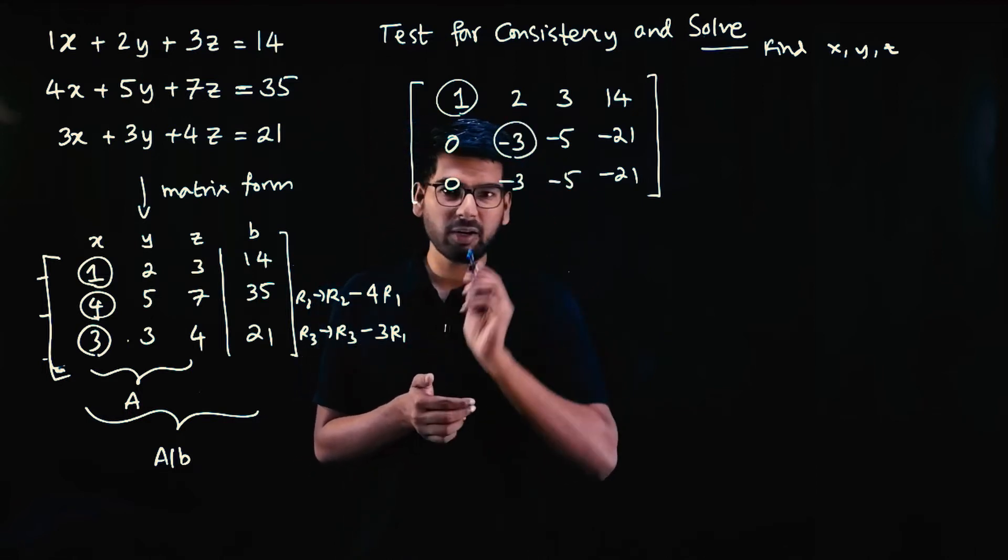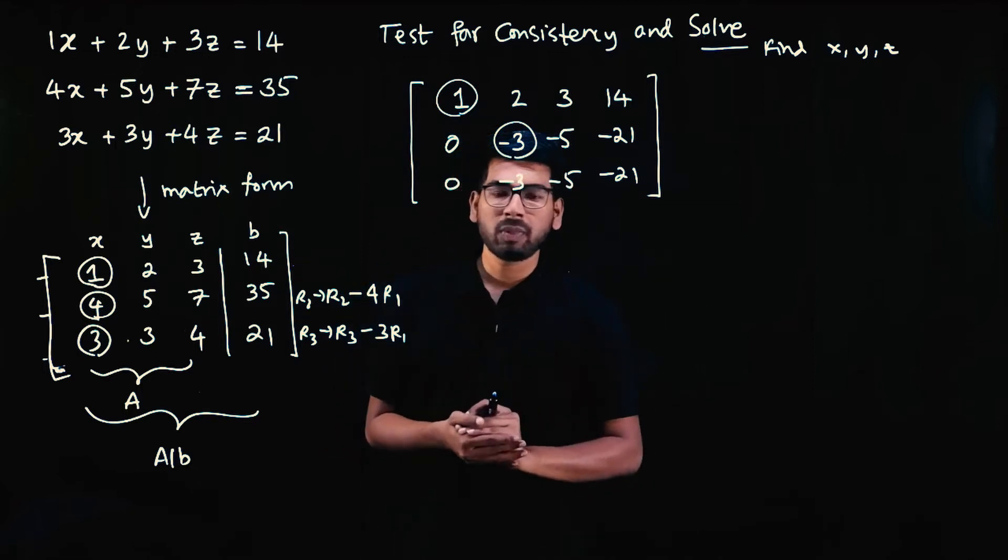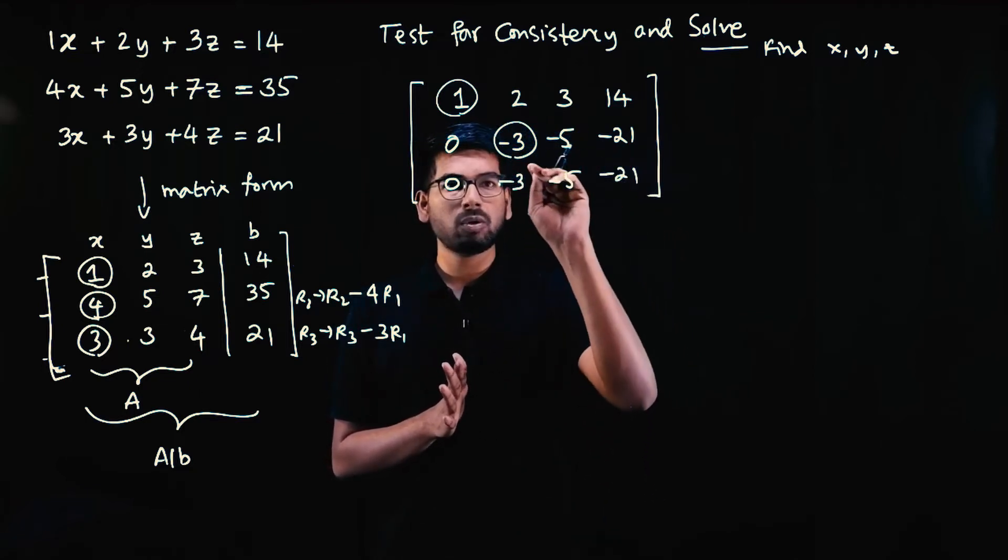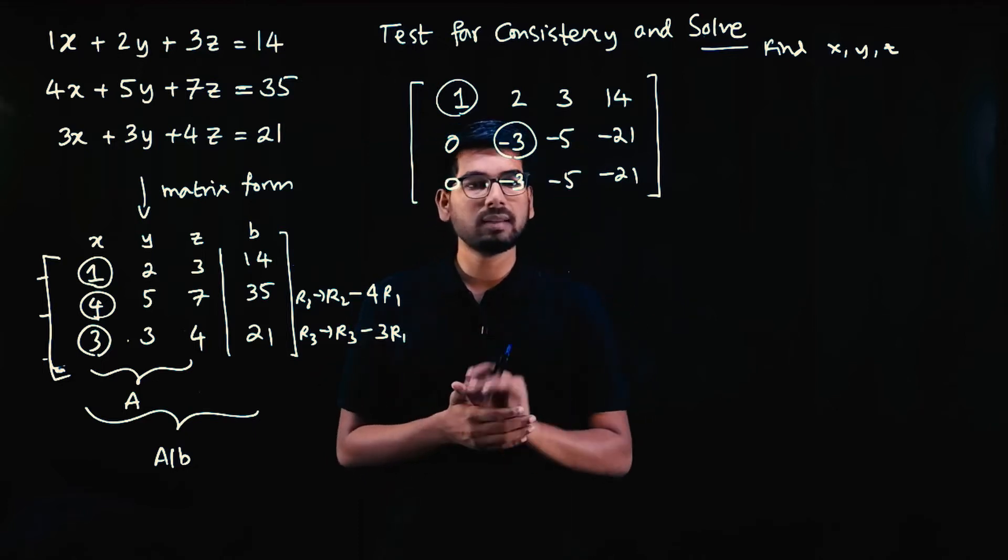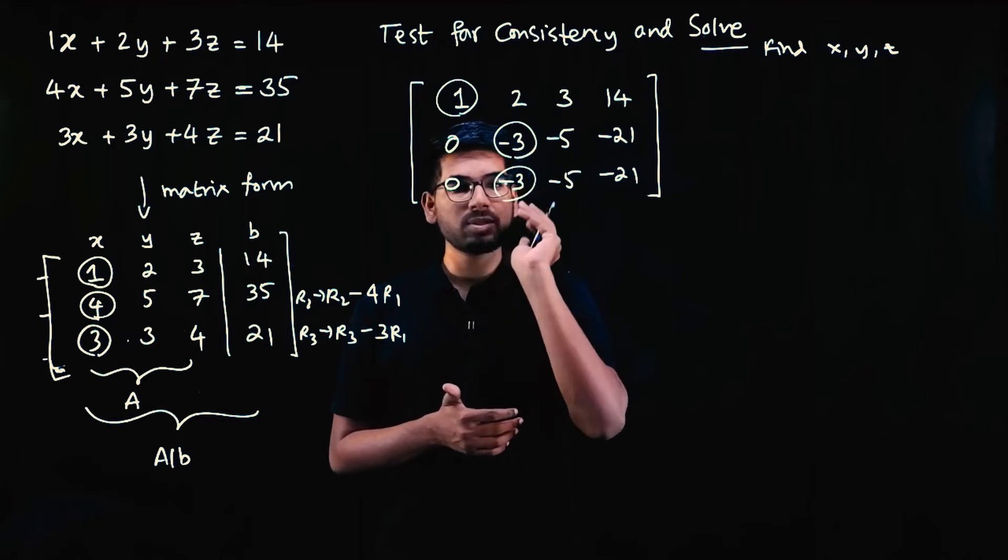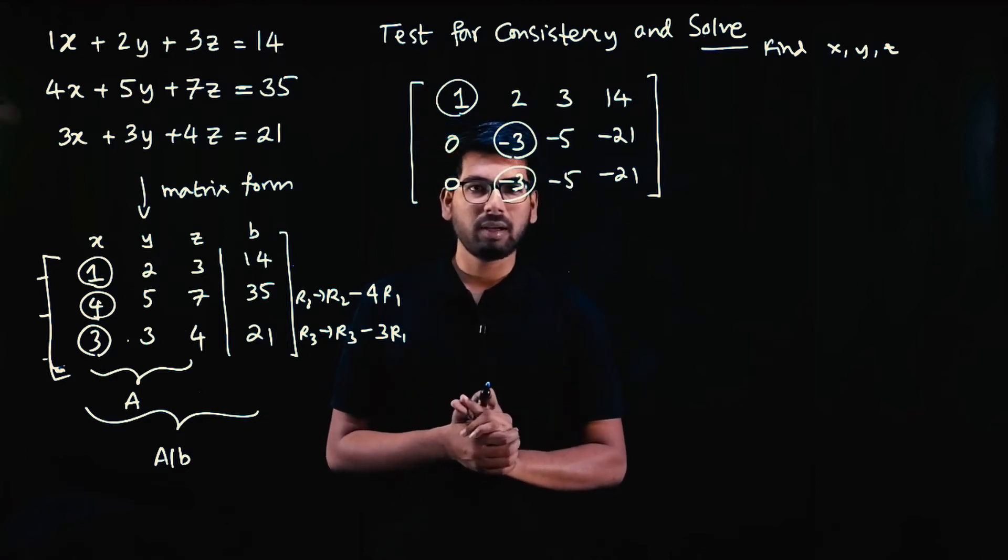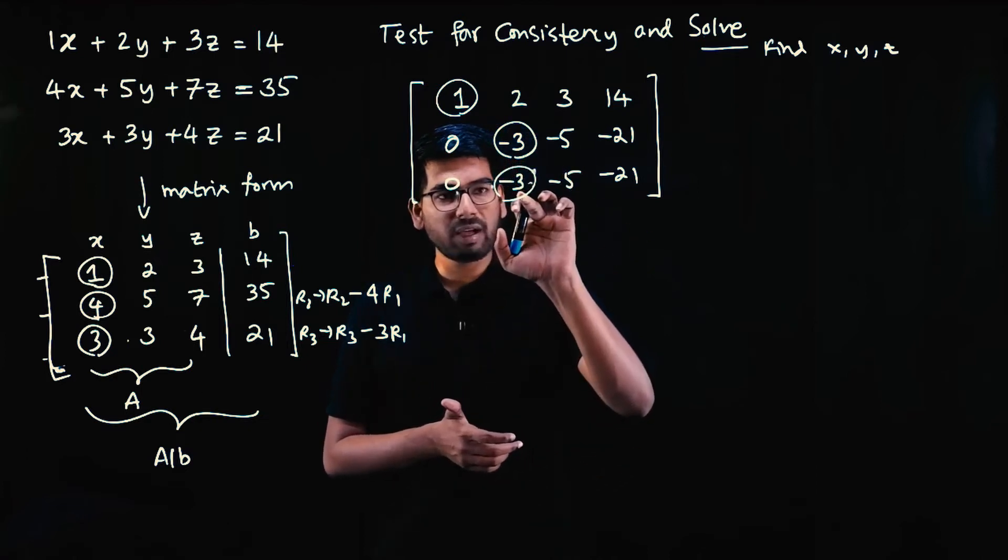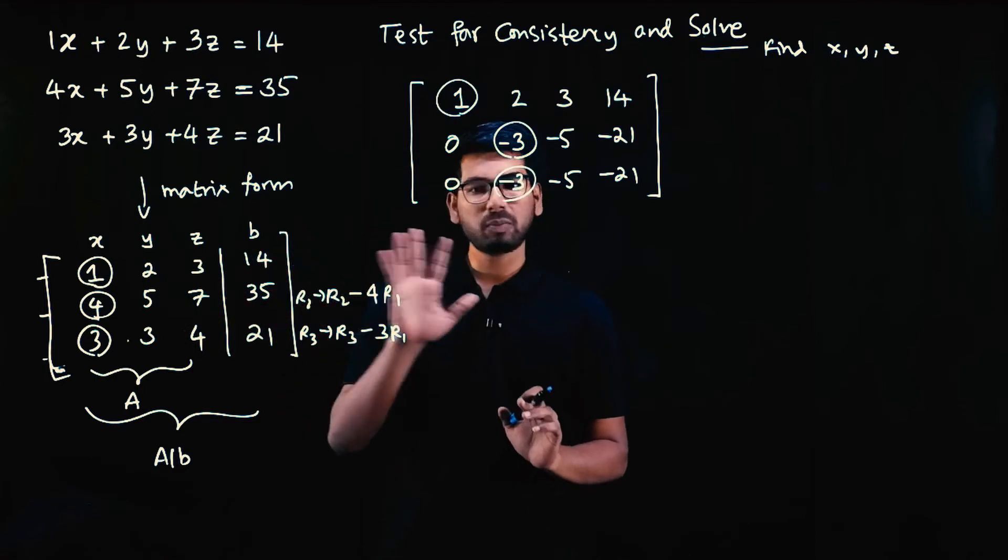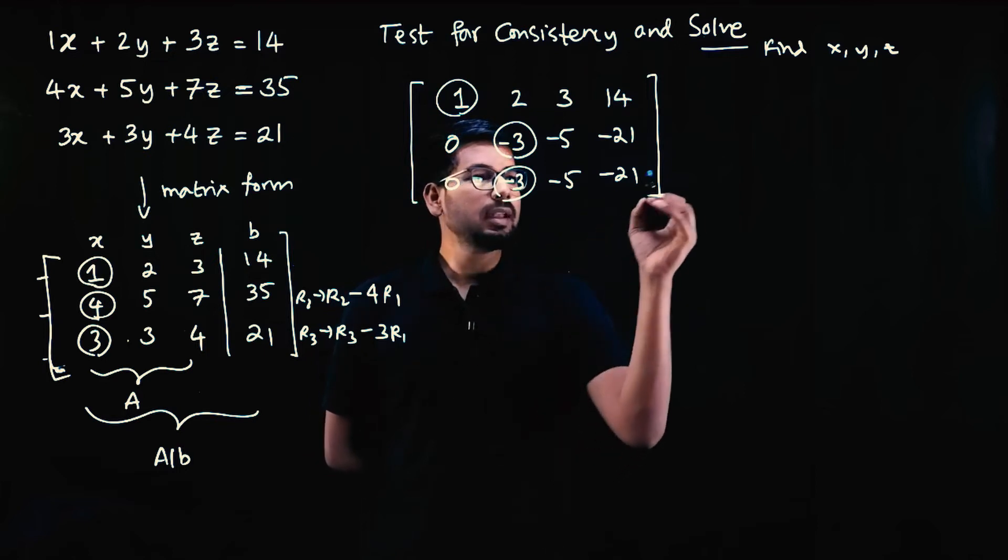Now make this 0. Check: this row and that row have the same elements. If we subtract these two rows, this element becomes 0. Both have minus 3. Minus 3 minus minus 3 gives 0. If there were different elements like 5 and 4, you'd need to make this 1 by dividing by minus 3 first. I'm skipping steps slightly here. So we'll do R3 minus R2.